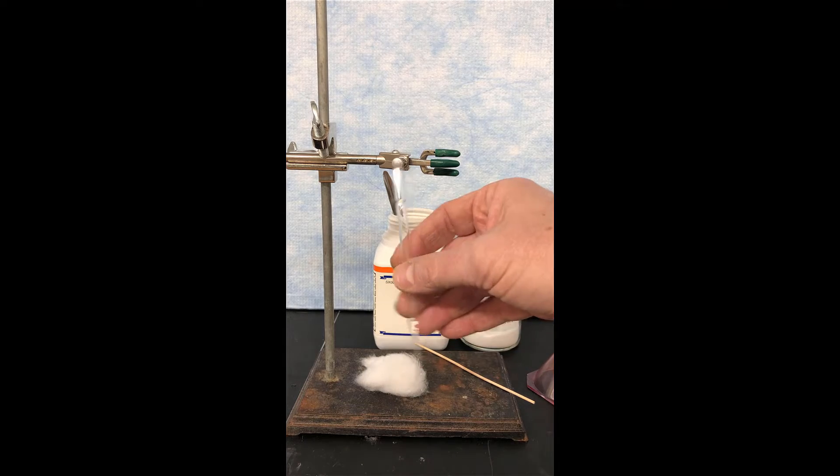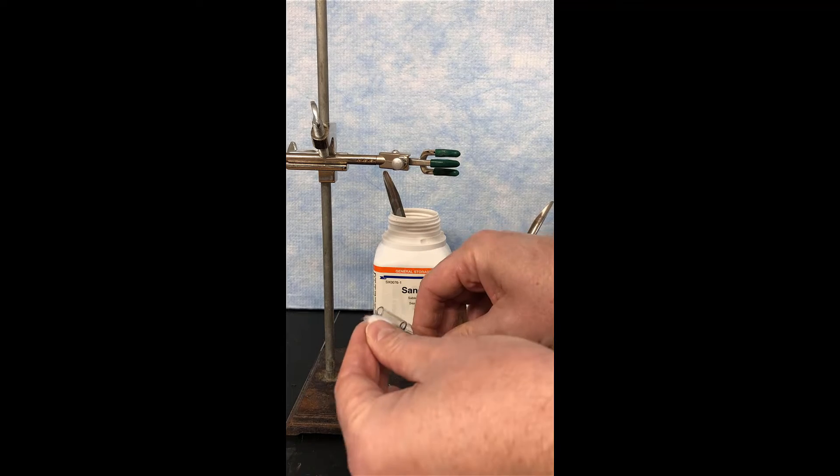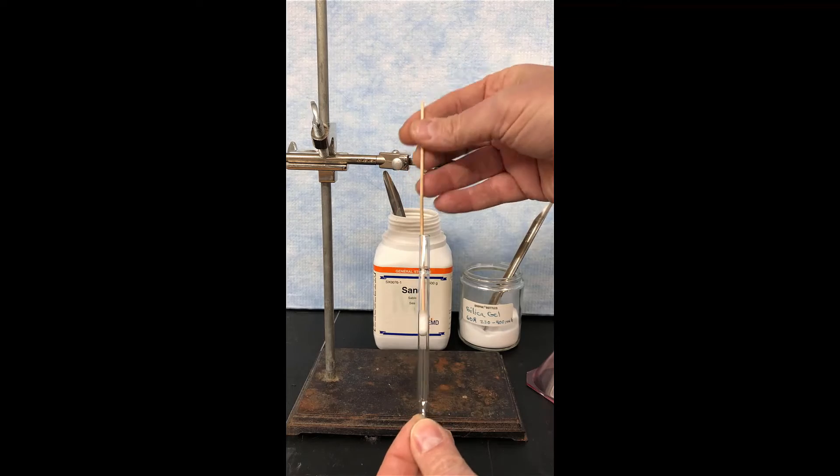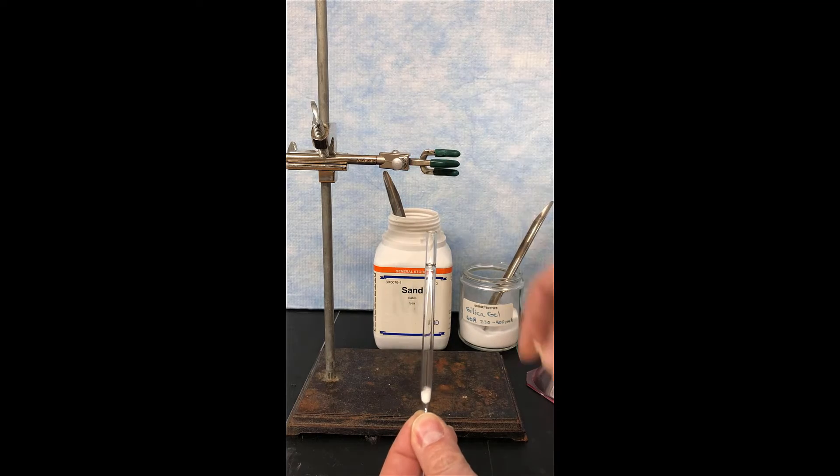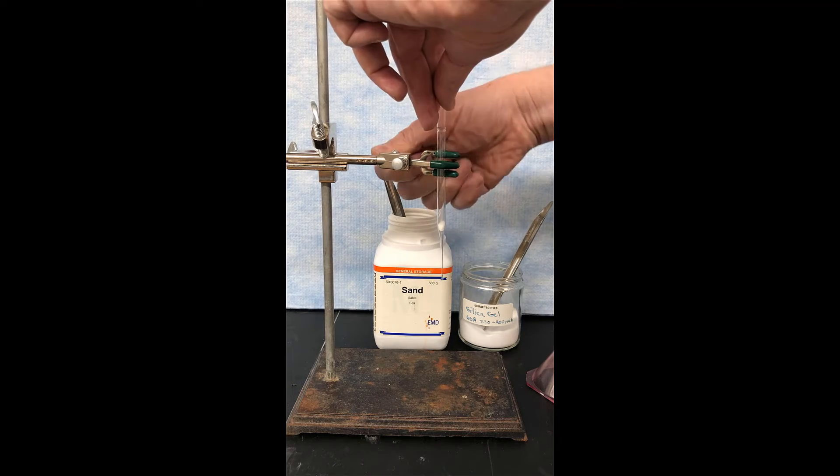In this portion of the experiment, we're going to use a glass pipette as a column. So we're going to rip off a little piece of cotton wool and shove it in this pipette, tamping it down with a stick until it gets down into the tip. Then we're going to clamp it. Next, we're going to put a funnel on top.